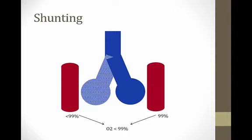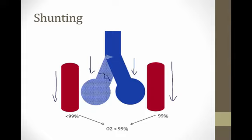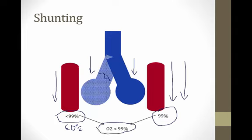Let me discuss shunting in more detail. Consider two alveoli, each with an associated capillary carrying blood past them to pick up oxygen. If one alveolus becomes plugged with mucus from chronic bronchitis, it does not fill with air and oxygen. Blood flowing past the healthy alveolus becomes 99% saturated with oxygen, while blood flowing past the plugged alveolus becomes hypoxemic — its oxygen saturation may fall to about 60%, similar to venous blood. When these two streams mix, you get hypoxemia. That is the mechanism of shunting causing hypoxemia in chronic bronchitis.